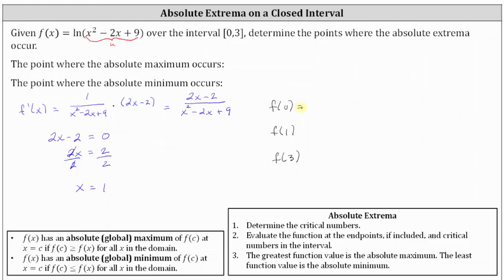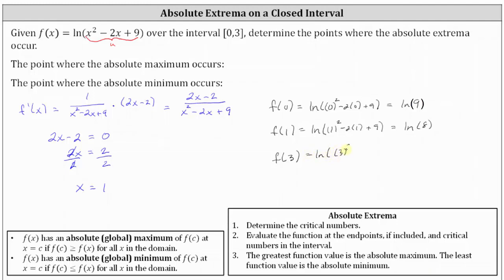Using the original function: f of zero equals the natural log of zero squared minus two times zero plus nine, which equals natural log nine. f of one equals the natural log of one squared minus two times one plus nine, which equals natural log eight. And f of three equals the natural log of three squared minus two times three plus nine — that is 18 minus six — which equals natural log 12.